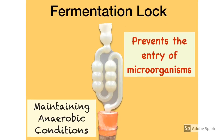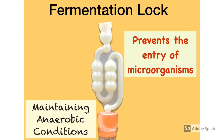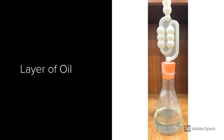The fermentation lock is a key piece of equipment used in this practical. It prevents the entry of microorganisms which could contaminate your flask, and it is very important in maintaining anaerobic conditions. We also added a layer of oil, but with a fermentation lock it's not essential. In the practical we did place a layer of oil into both the control and the test flask in addition to using the lock — this is an extra precaution, and in many books you won't see both.